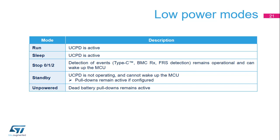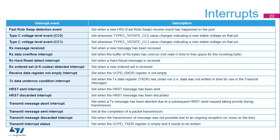Type-C voltage threshold detectors come from either CC pin. The power delivery receiver signal comes from the selected CC pin. The FRS detection signal also comes from the selected CC pin. When an interrupt from the UCPD is received, the software has to determine the source of the interrupt by reading the UCPD SR register. Depending on which bit is set to 1, the interrupt service routine should handle that condition and clear the bit by writing to the appropriate bit in the UCPD ICR register. This slide summarizes all the events detected by the UCPD module that can cause interrupt requests.